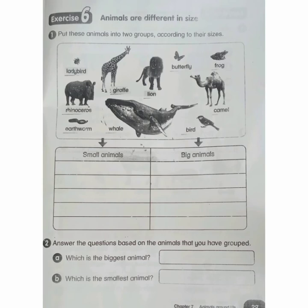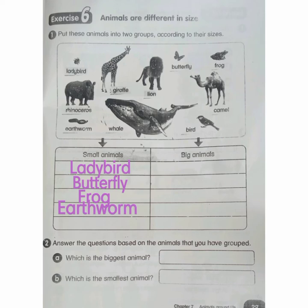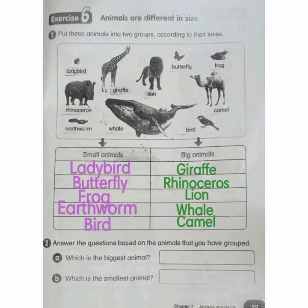Exercise 6: Animals are different in size. Number 1: Put these animals into two groups according to their size. Small animals: ladybird, butterfly, frog, earthworm, and bird. Big animals: giraffe, rhinoceros, lion, whale, and camel. Number 2: Which is the biggest animal? Whale. Which is the smallest animal? Ladybird.